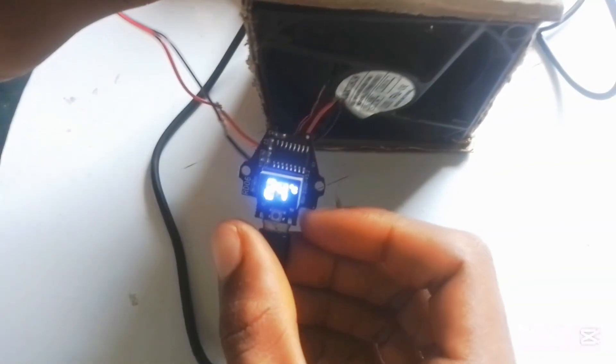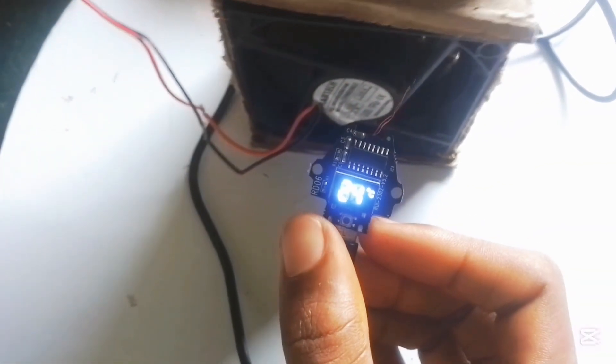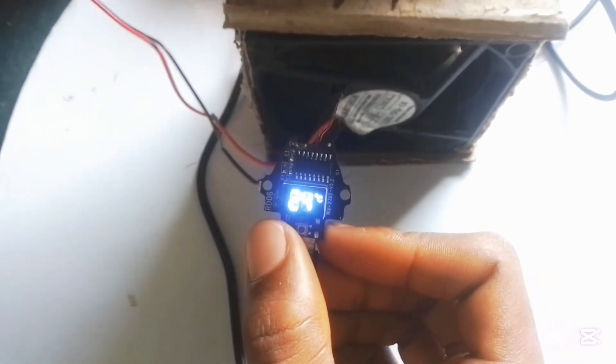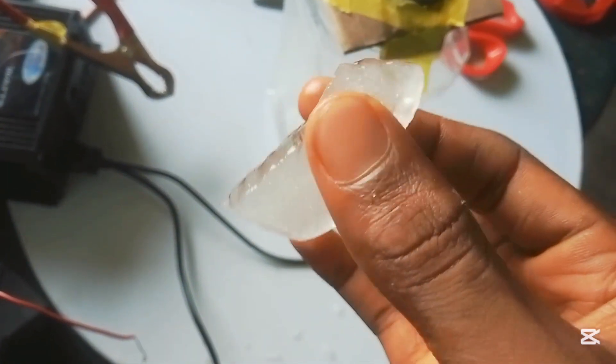What I actually did is that I made the project using the Peltier module and I'm going to be making the project again using just ice blocks to actually see which one is efficient and which one is better in making. So you need to stay tuned to that. And if you haven't subscribed, hit the subscribe button. Let's go to it.